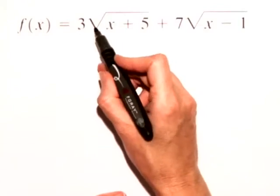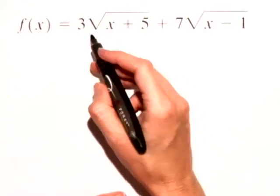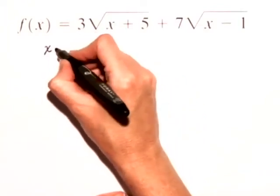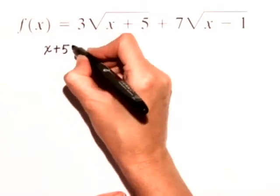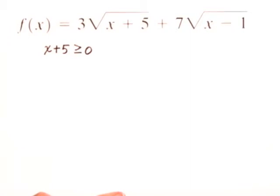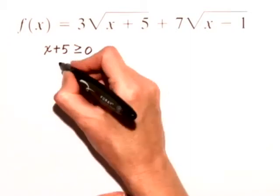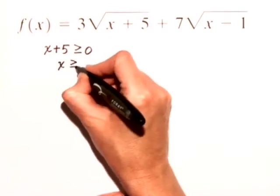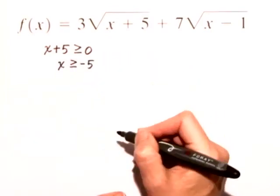We want to make sure when we have an even indexed radical that what's underneath is greater than or equal to 0. So in this case, x + 5 ≥ 0, which means x ≥ -5.